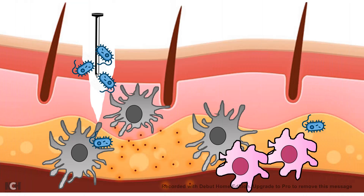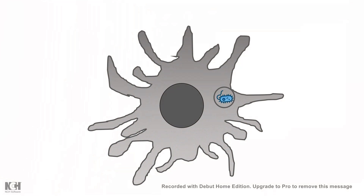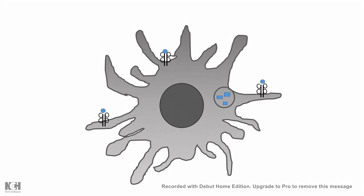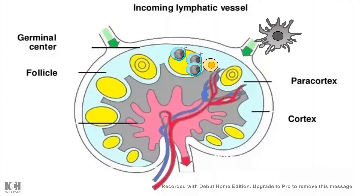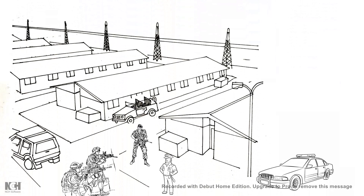These inflammatory mediators call other macrophages and dendritic cells to the site of invasion. Not only that — the dendritic cell engulfs the pathogen, chews it up, and displays some of its antigens on MHC class II molecules, since these are classical antigen-presenting cells. They then mobilize to the lymph node, which is like an army barracks, where they present the antigen to T cells and B cells, leading to adaptive immune activation.